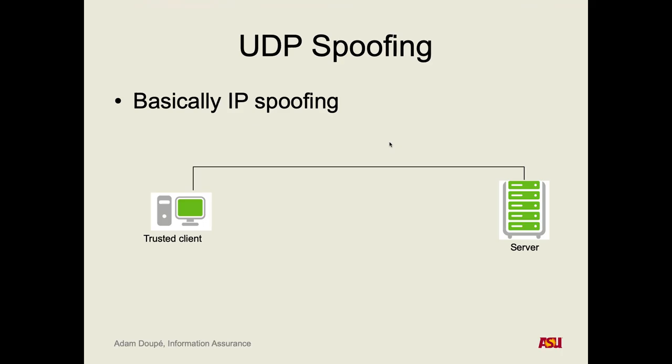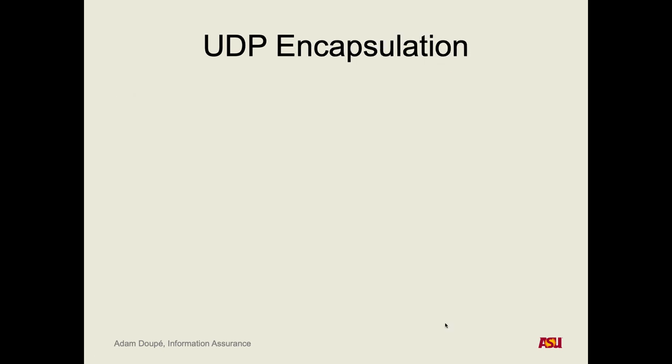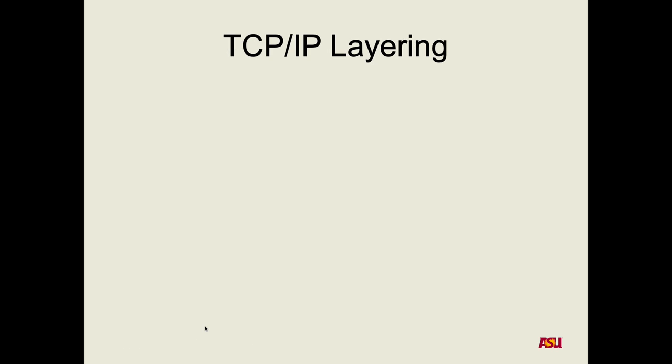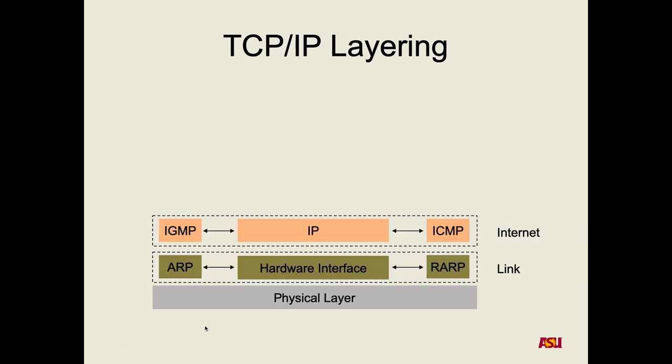Alright, so on Thursday we talked about UDP. So what was the entire point of UDP? Why do we need UDP? We already have nice ways to send a packet of data from one IP address to another IP address. So what do we get out of UDP? Yeah, so once the packet gets there, it needs to know what application it needs to go to. So how does UDP solve that problem? The concept of ports.